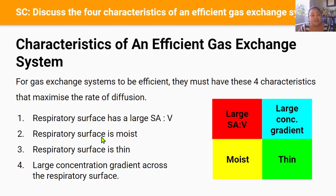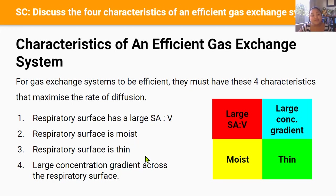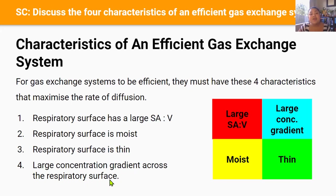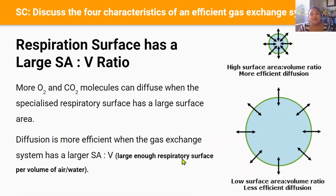For gas exchange systems to be efficient they must have four characteristics that maximize the rate of diffusion. First, specialized respiratory surfaces must have a large surface area to volume ratio. Second, they must be moist. Third, they must be thin. And fourth, there must be a large concentration gradient across the specialized respiratory surface. The specialized respiratory surface is the location or site where gas exchange happens.